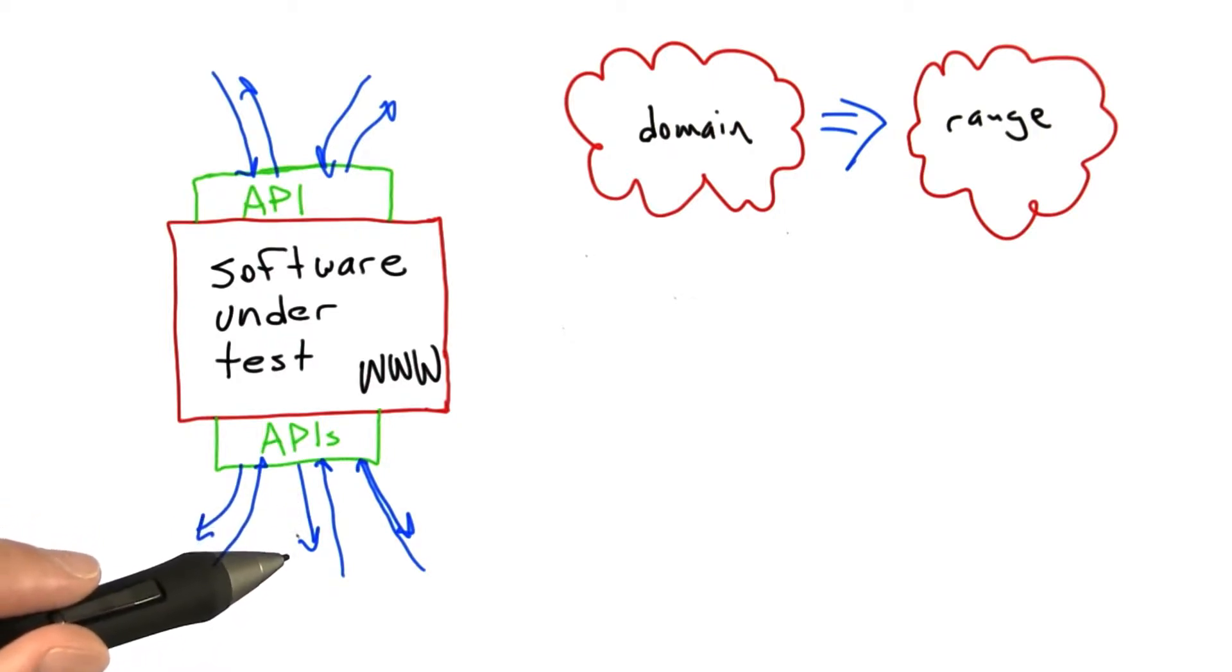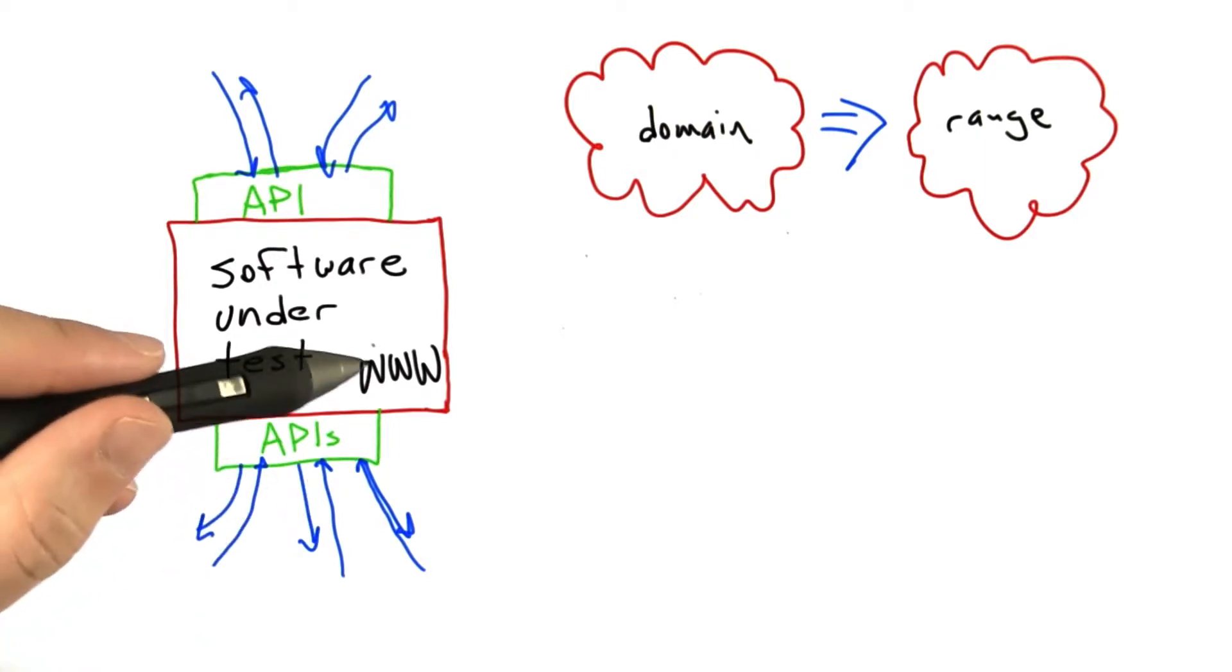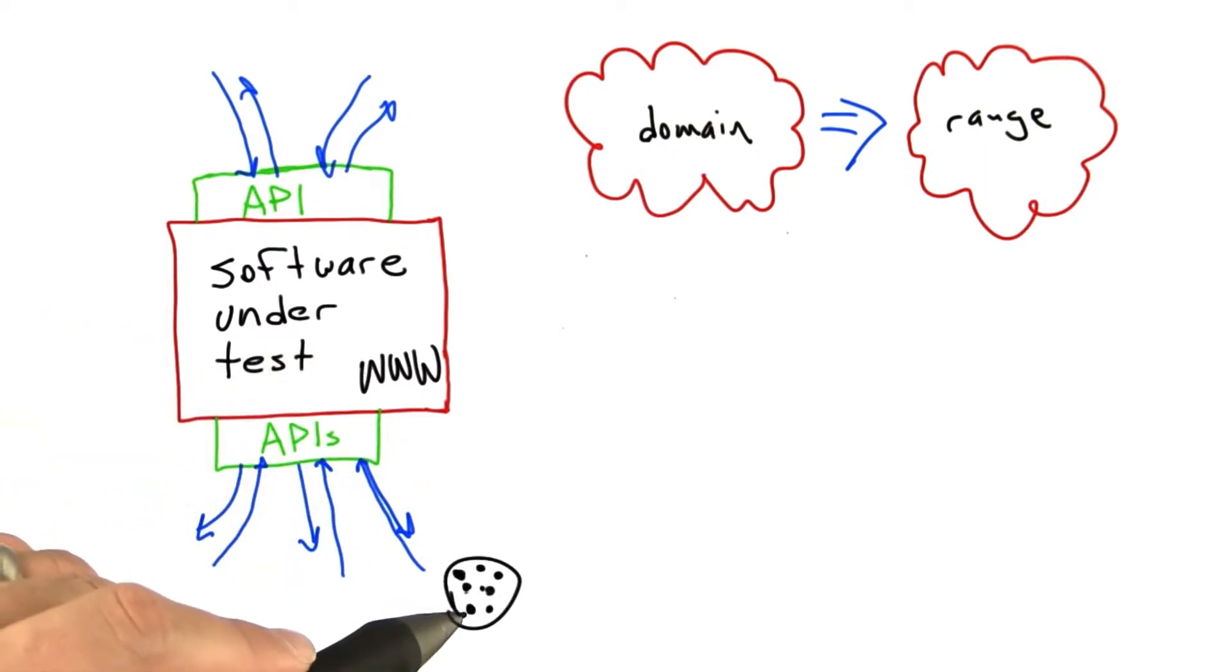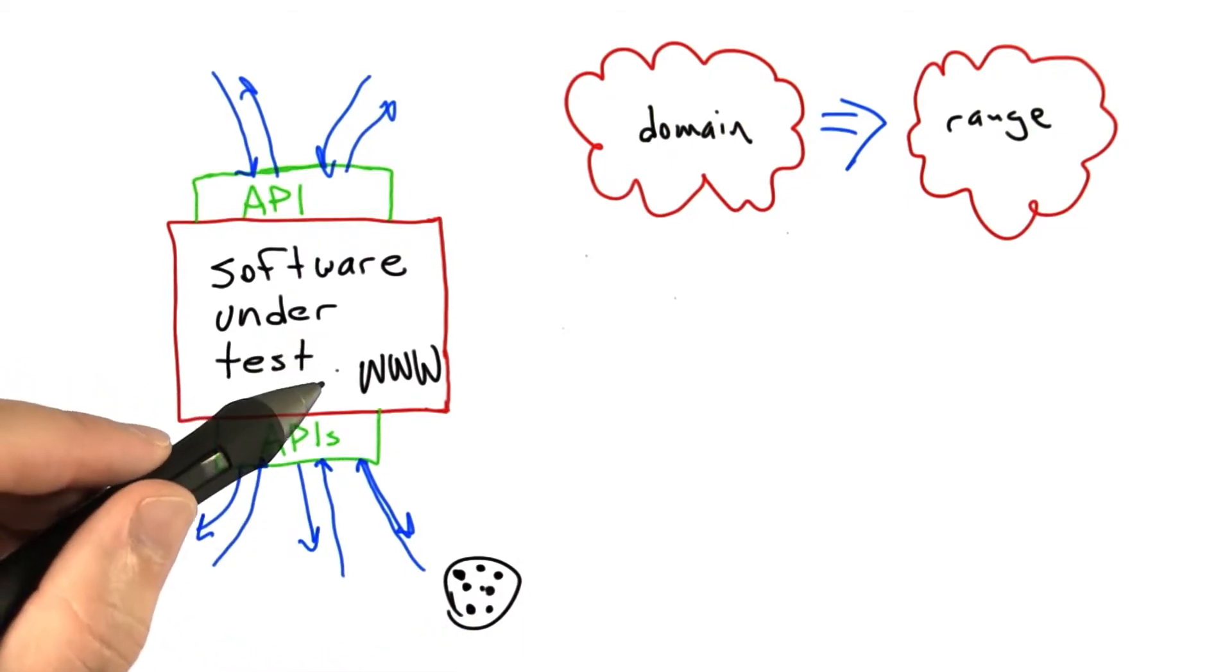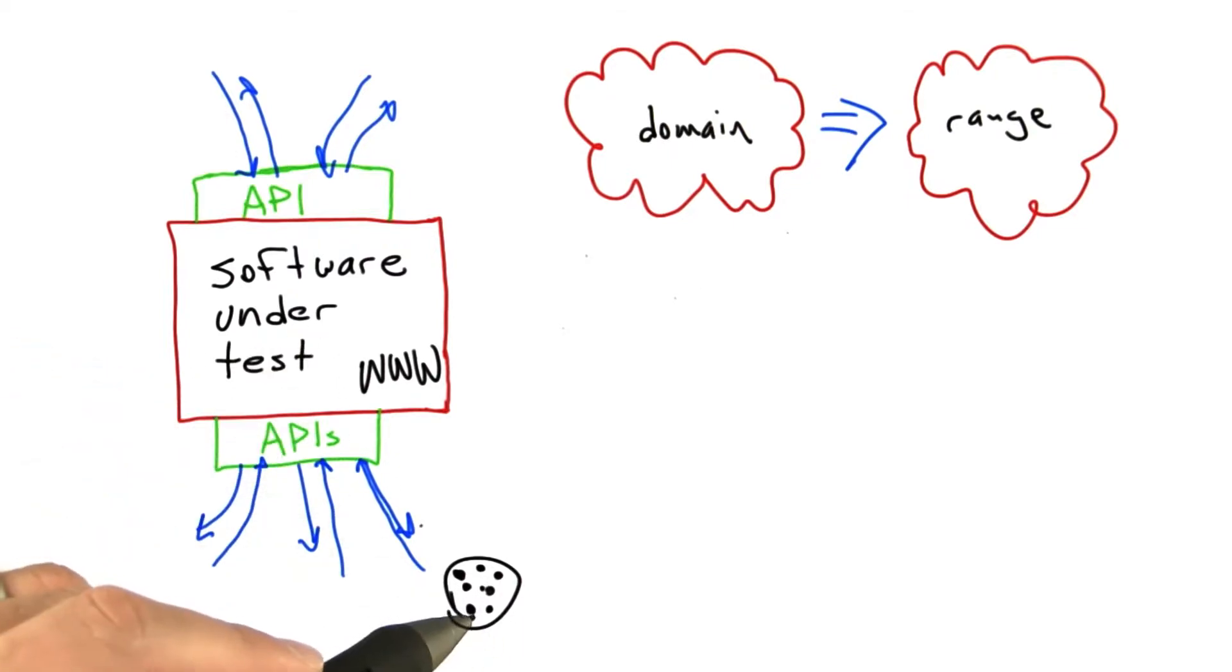And just as a simple example, let's take the case where our web browser is storing cookies. Here I'm trying to draw a chocolate chip cookie, storing cookies onto the hard drive of the local computer. Most of the time during testing, we expect the storage and retrieval of cookies to operate perfectly normally.